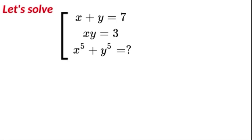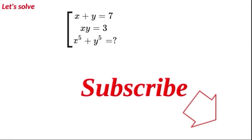Hello and welcome back to Maths Plus. Today we have an interesting problem where we're going to go from a linear equation where x plus y is equal to 7 and a product of x by y is equal to 3, and we're going all the way up to x to the power of 5 plus y to the power of 5. Maybe give it a go, pause the video and let me know how you get on. If you're new to the channel, don't forget to subscribe.